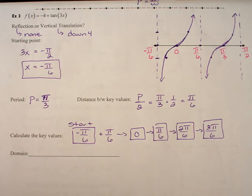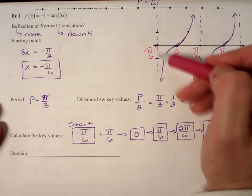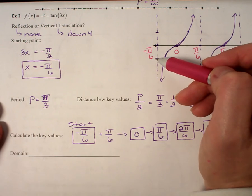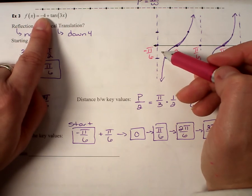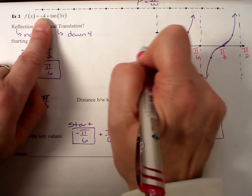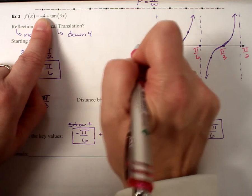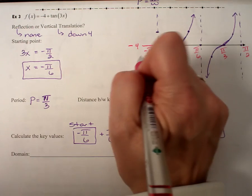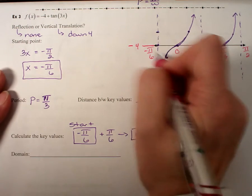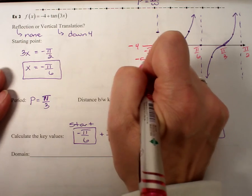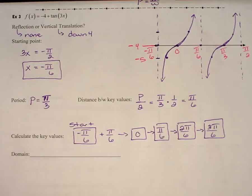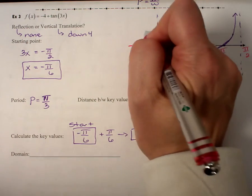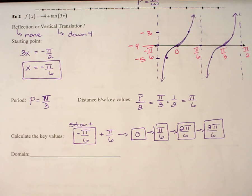Now, this graph has something that we didn't see on the others. You'll notice that I didn't label these values, and I didn't do that for a reason. Because this graph had a vertical translation, this value right here is actually a negative 4. I've moved my x-axis down 4. Then, I've moved down, my amplitude is just 1, so this is actually a negative 5. And then, I'm going to move up just one more, and I get a negative 3.